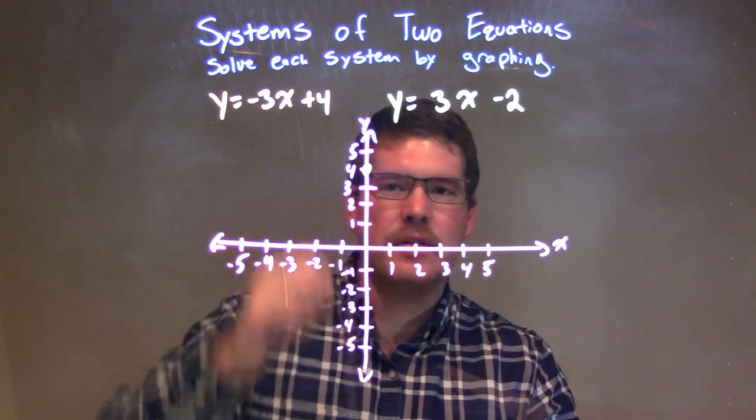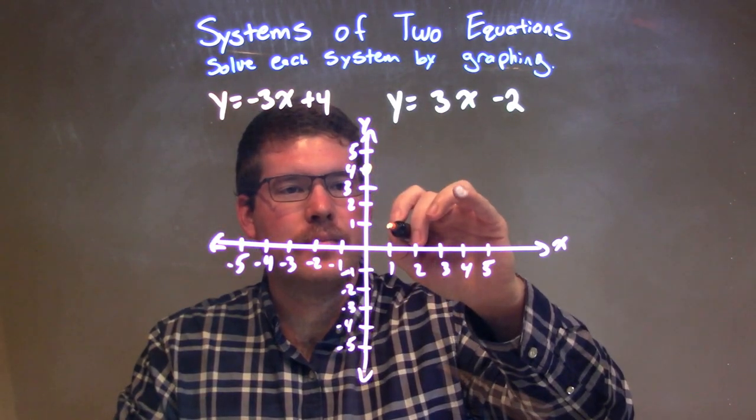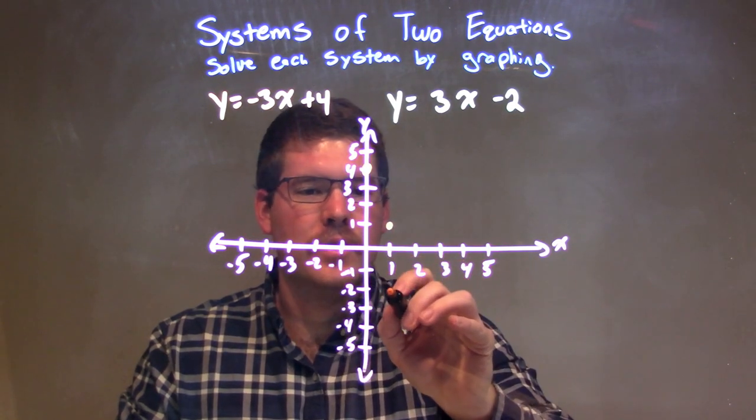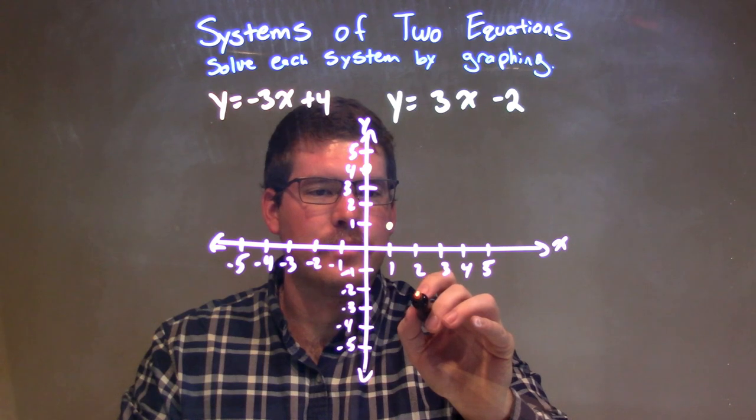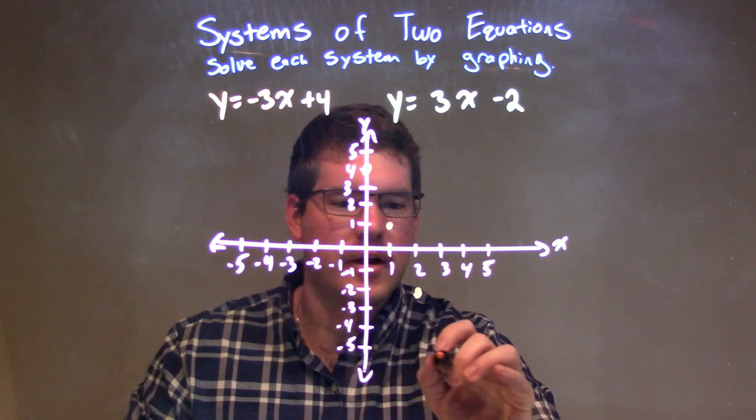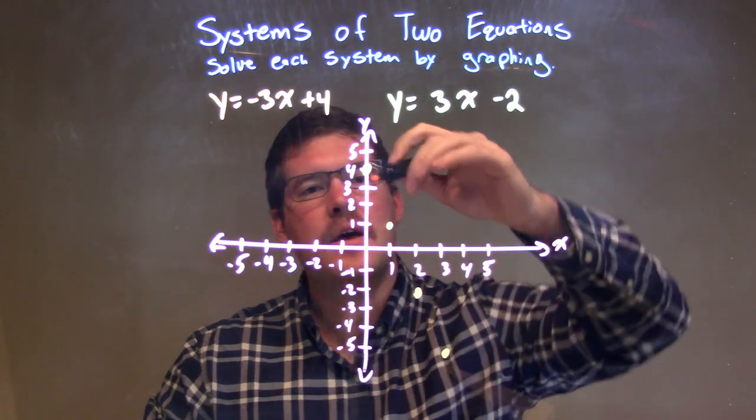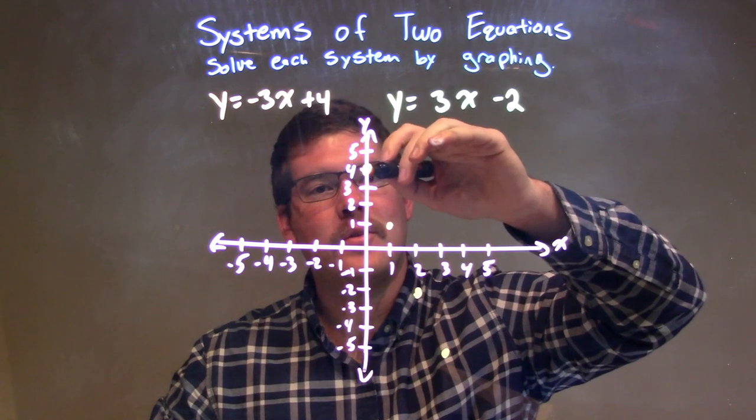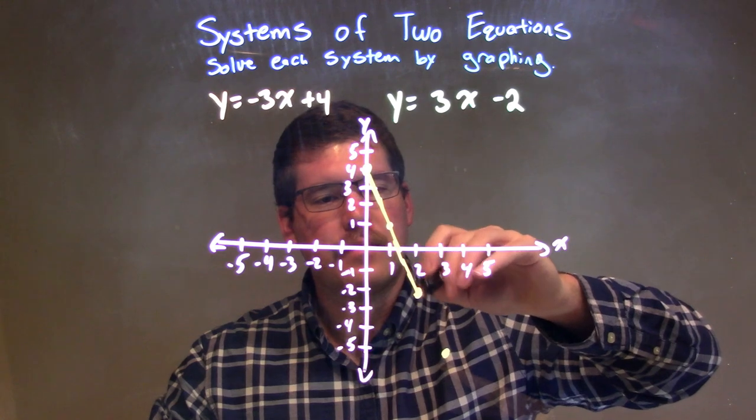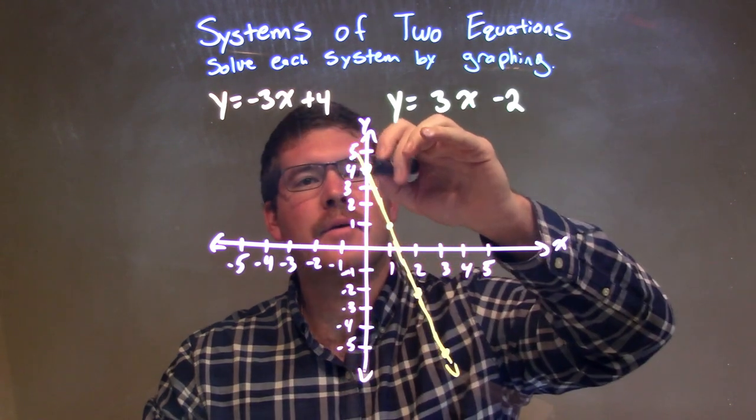Now, we have a slope of negative 3. So, we're going to go down 3 units. 1, 2, 3 over 1 unit. I'm going to do that again. Down 3 units. 1, 2, 3 over 1 unit. Okay. And for good measure, let's go 3 more down. 1, 2, 3, negative 5 over 1. And it's roughly right there. Let me see. Now, I'm at the best of this. So, we'll see what happens. But if you draw a line here, connect it. And we're going to move on.